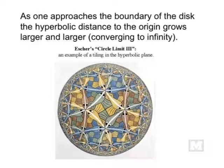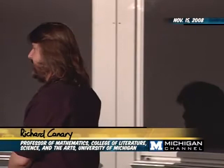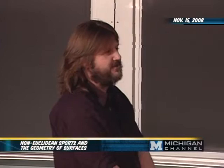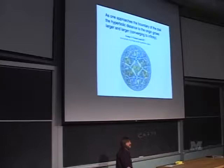Here's a famous Escher print. All those fishes have exactly the same size from a hyperbolic viewpoint — you can see little yellow fishes accumulating near the boundary, all exactly the same size. This is like a gigantic chess board being a tessellation of the Euclidean plane by squares of exactly the same size. This is a tessellation of the hyperbolic plane by fishes of exactly the same size.